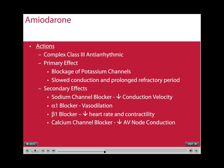Amiodarone is normally given after the third defibrillation in resistant VT-VF. It is a complex class III antiarrhythmic with its primary effects of blocking potassium channels, which slows conduction and prolongs refractory periods. Its secondary effects include sodium channel blocking, which decreases conduction velocity, and also causes alpha-1 blocking, which causes vasodilation. Its beta-1 effects include decreasing heart rate and contractility, and it also has a calcium channel blocking effect, which decreases AV node conduction.